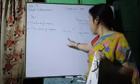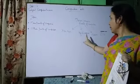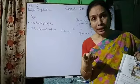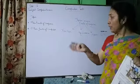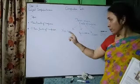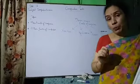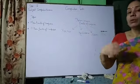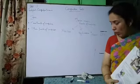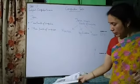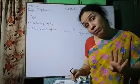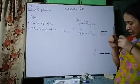So monitor, keyboard, mouse, and CPU — these are the four main parts. Because if anyone is not in your system, your computer system will not work. So these are the four main parts of computer.